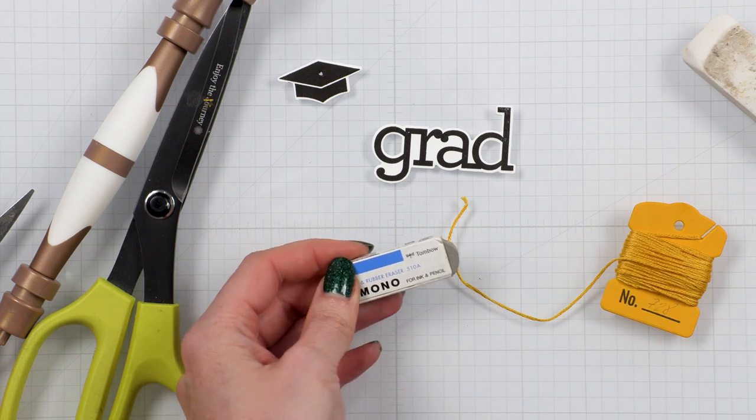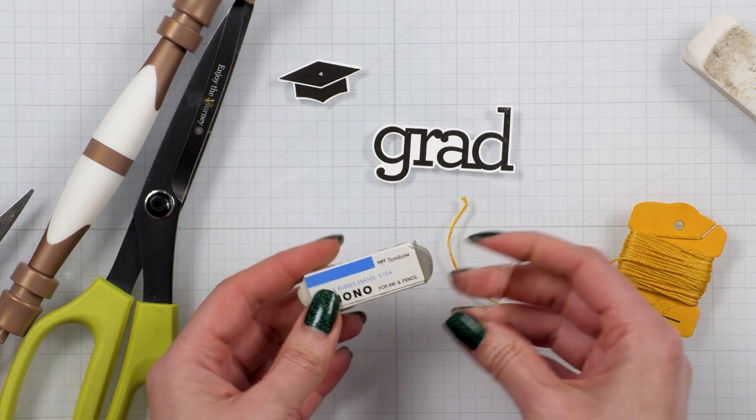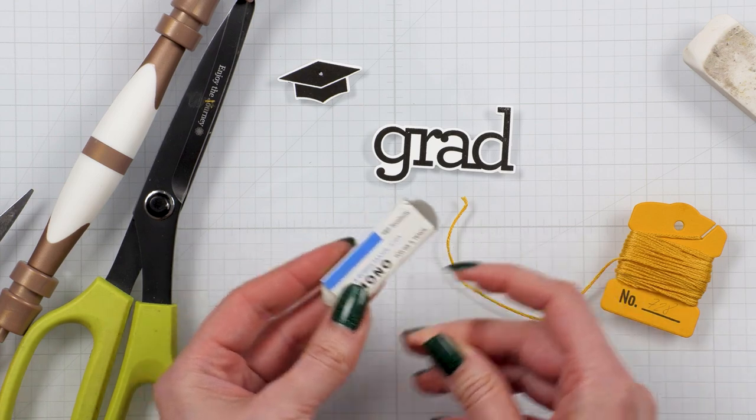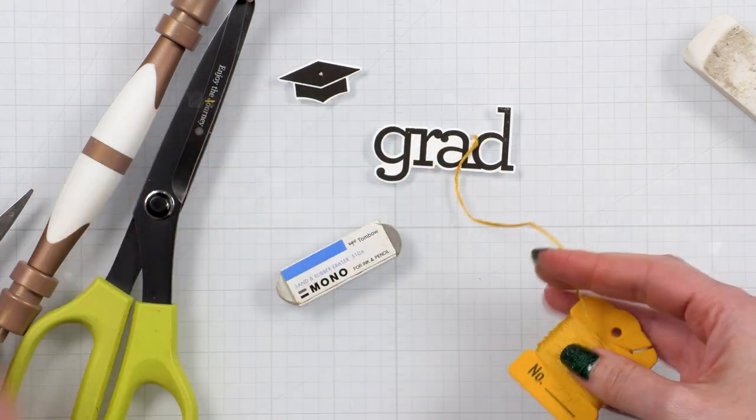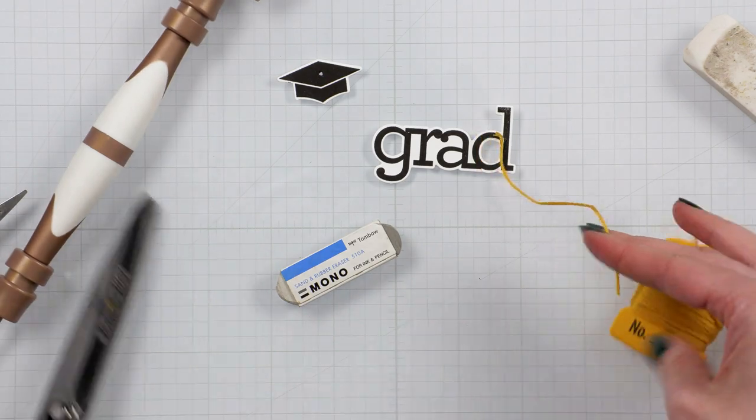In my case I'm using another pencil eraser, a smaller one. You can also use a clear block or even a piece of cardstock. Just something small as we don't need the tassel to be too big.